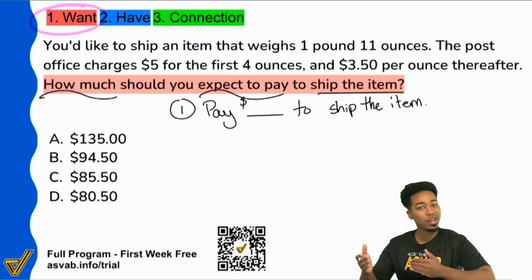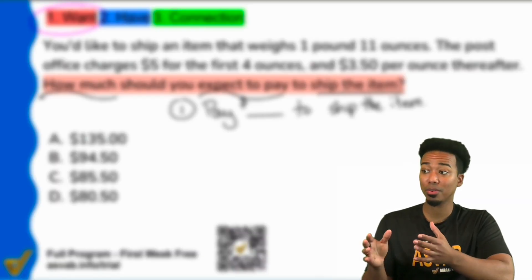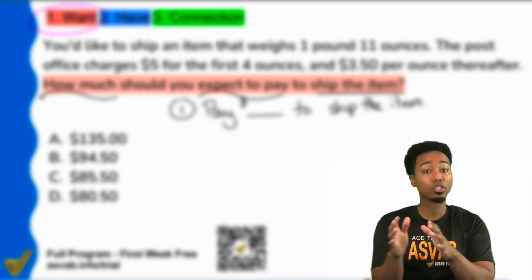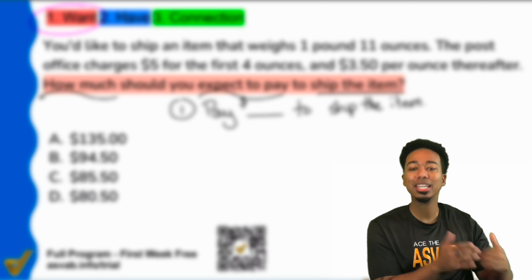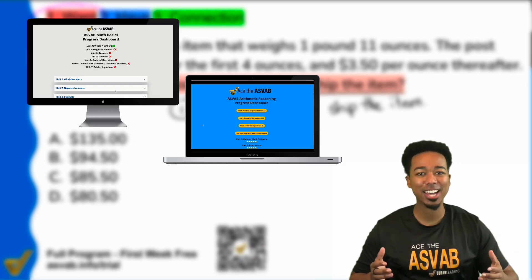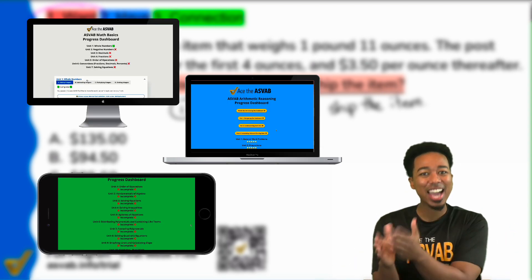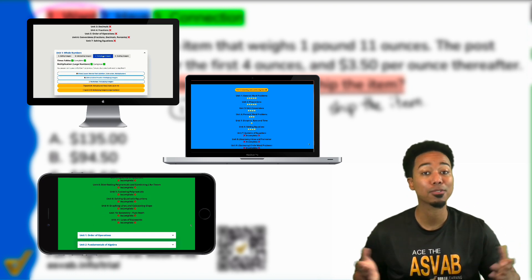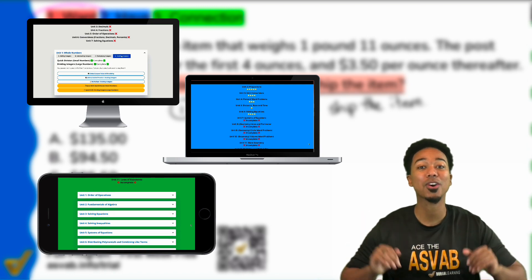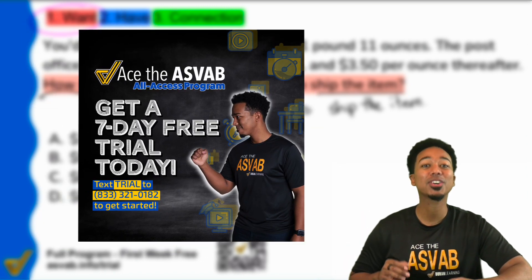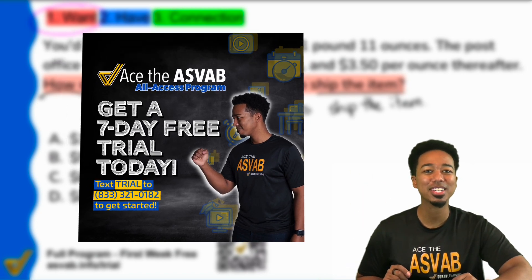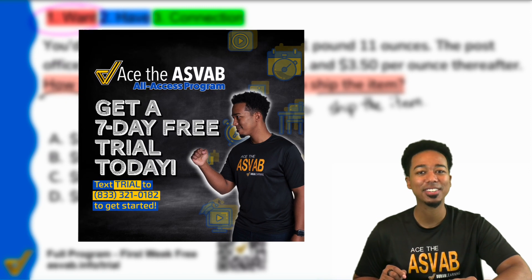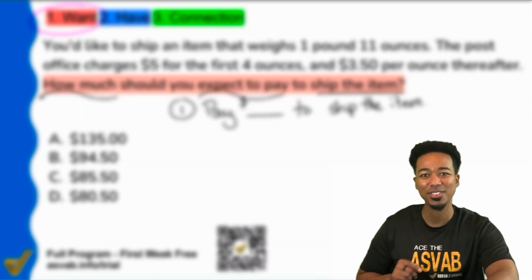The hardest part about practicing for the ASVAB, in my opinion, is knowing when you're ready, knowing that you are good to go and move on from this topic. That's why our full program has a progress dashboard, letting you know exactly what you're good at and what you need to work on. You can join our full program for free for a full week, no credit card required. Text trial to 833-321-0182 or click the link in the description.